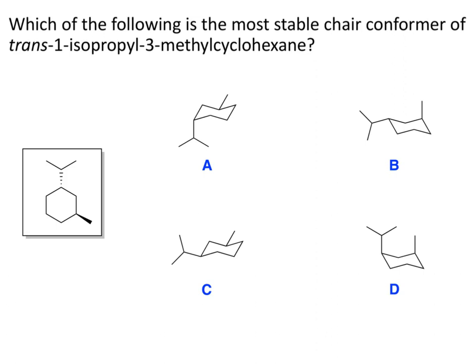This question asks which of the following is the most stable chair conformer of trans-1-isopropyl-3-methylcyclohexane, which is shown in the box. A lot of people will mistakenly just pick C and say C has both substituents equatorial, it must be the most stable. Now, if you weren't given a question statement and all you were given was these four structures and you were asked which is the most stable, C is the most stable chair structure.